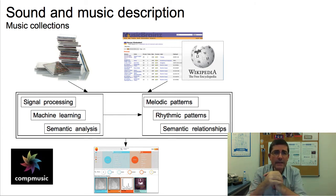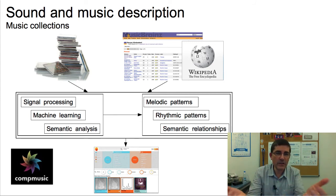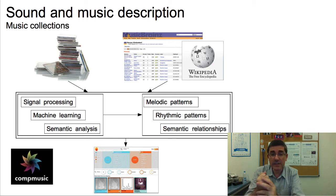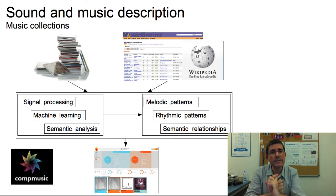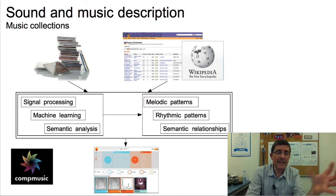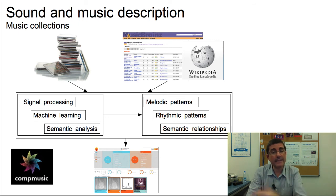Another topic is moving toward music collections — not just describing individual sounds but describing collections of music recordings. A project I am leading is called CompMusic, in which we study several music collections from different traditions around the world: the two Indian traditions of Carnatic and Hindustani, one from China which is the Beijing Opera, one from Turkey which is the Turkish Makam tradition, and one from North Africa — the Maghreb — which is Arab-Andalusian music. These are classical traditions with specific peculiarities that require particular analysis.